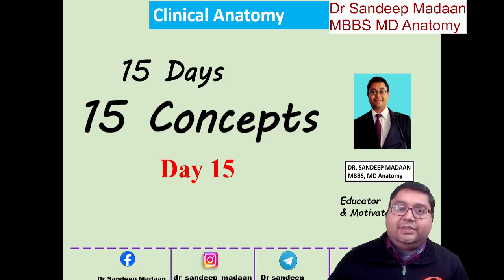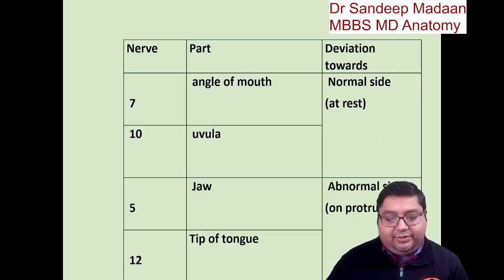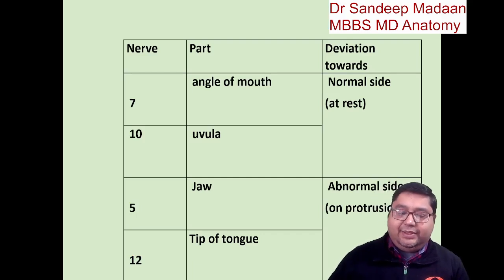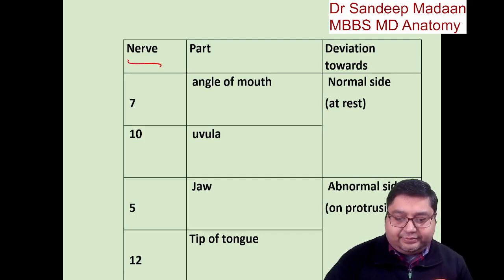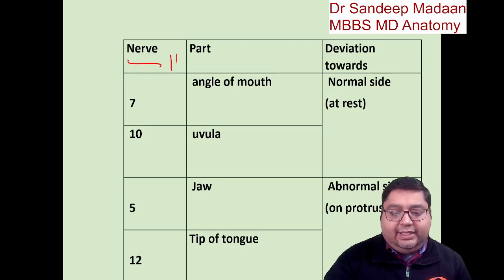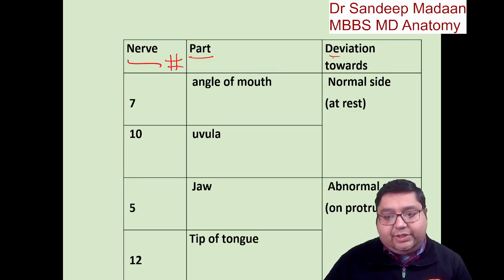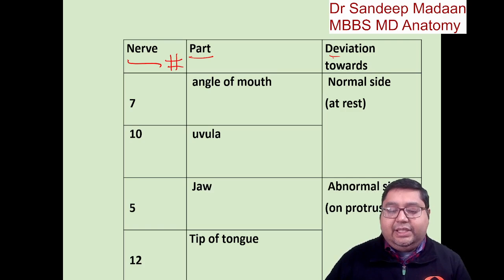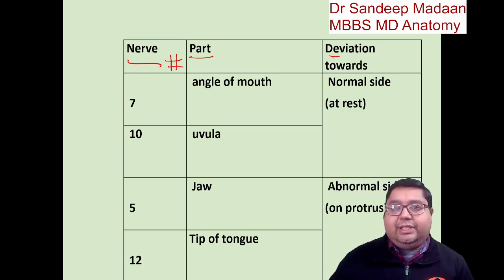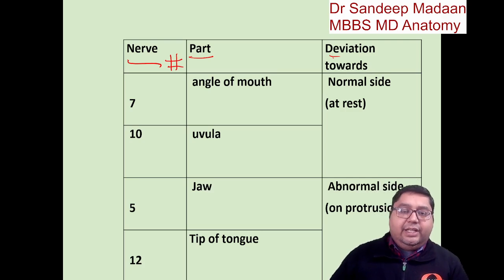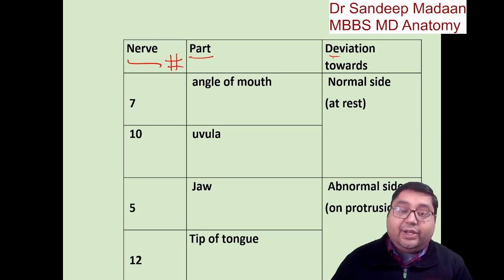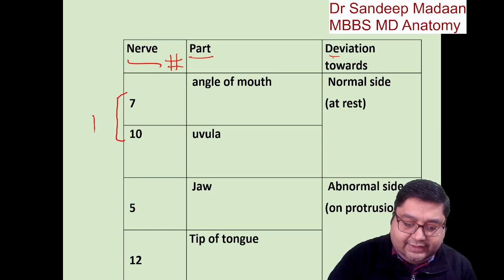The concept for today is the Rule of 17. When certain nerves get injured, some part gets deviated, and we need to know which part will deviate towards which side — towards the normal side or the abnormal side. The rule is: 7 plus 10 equals 17, and 5 plus 12 equals 17.